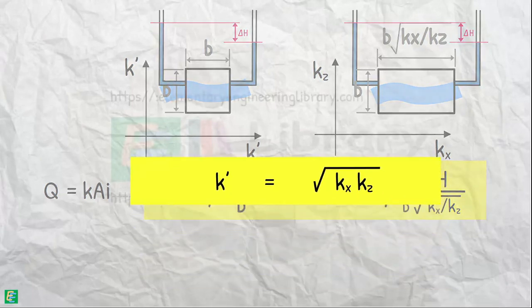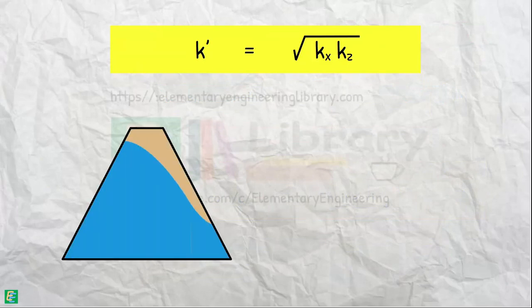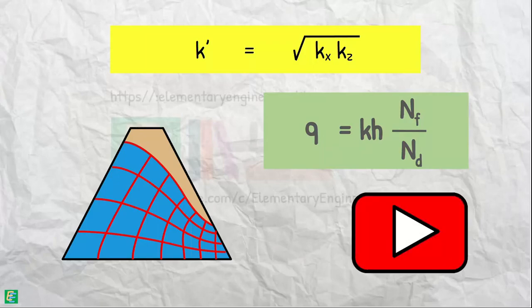Now that we have the effective permeability of the transformed section, using the flow net, the seepage quantity q can be computed from the equation that we have discussed in the flow net.